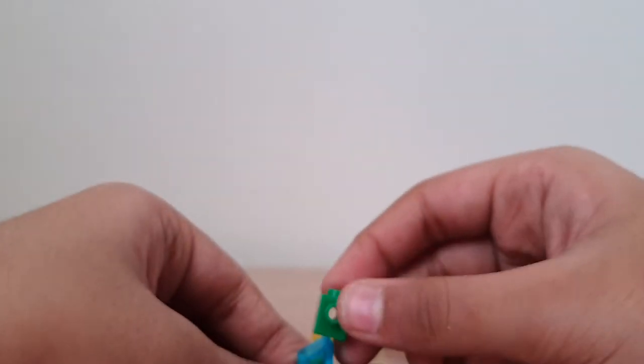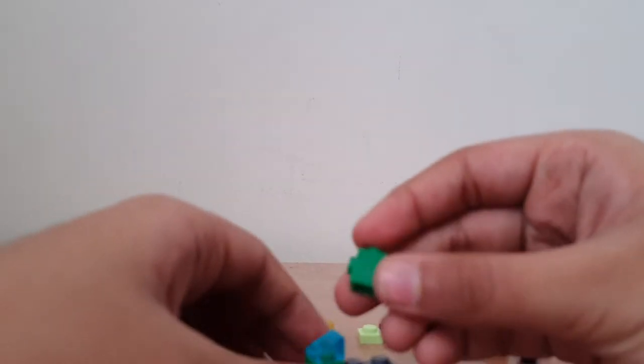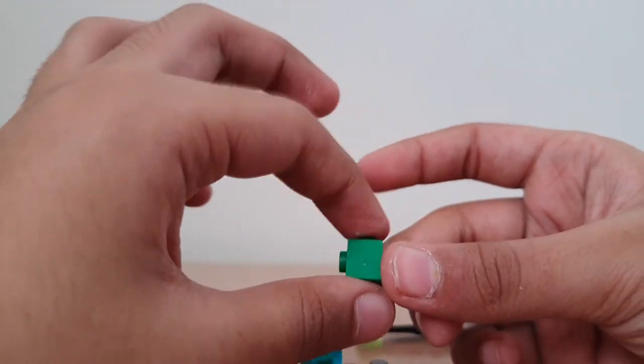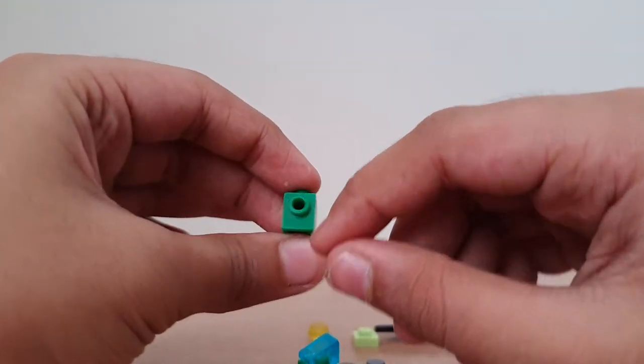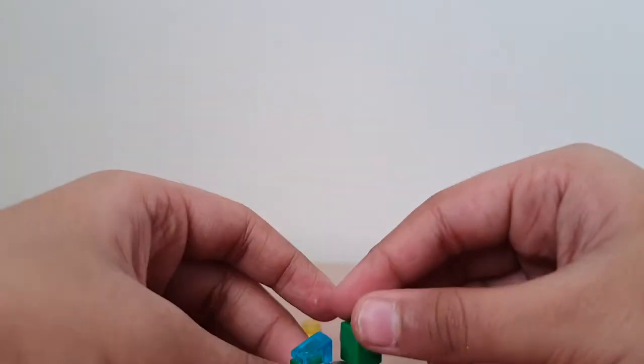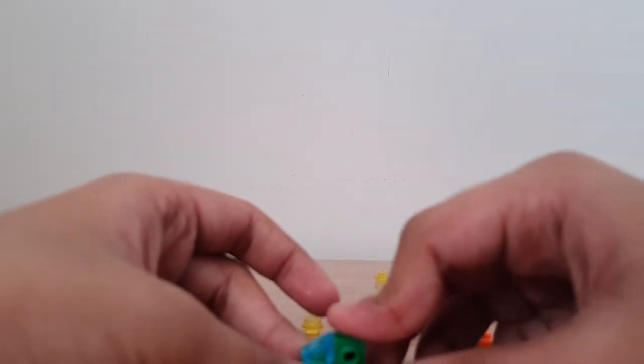Okay then, now the 1x1 plate brick. A dot here and here. It has to be there, it has to be kept in the middle.